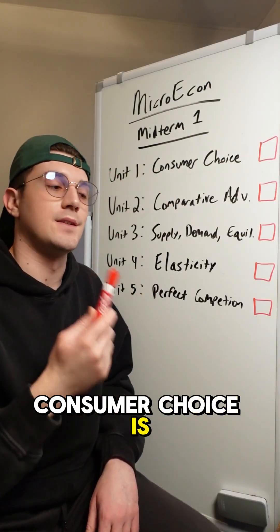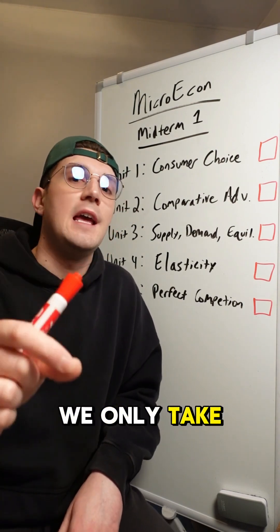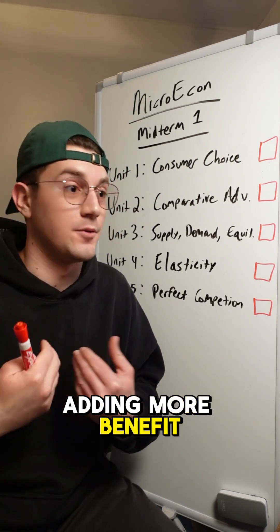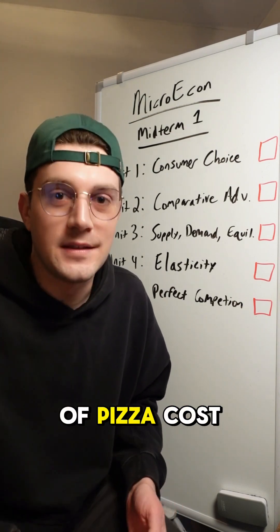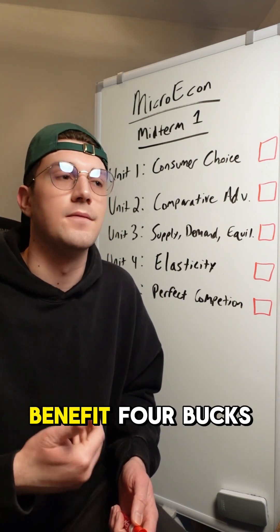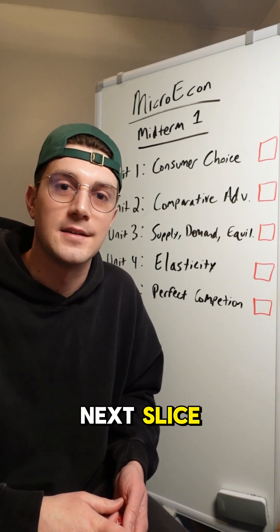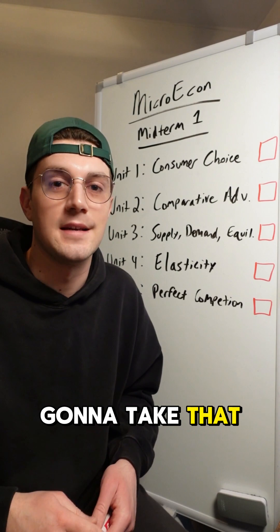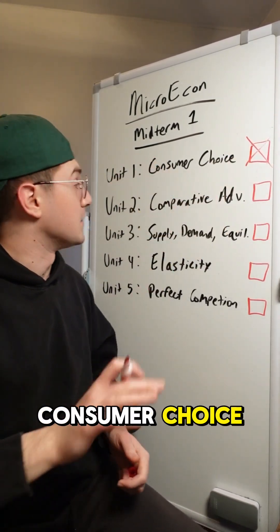Consumer choice is all about marginal benefits and costs. As consumers, we only take another unit if we are adding more benefit or utility than it's costing us. If a slice of pizza costs five bucks but you'd only benefit four bucks from eating it, then you're not going to eat that next slice. But if you'd benefit 12 bucks from eating another slice of pizza, then you're going to take that next one. That's basically what you need to know about consumer choice.